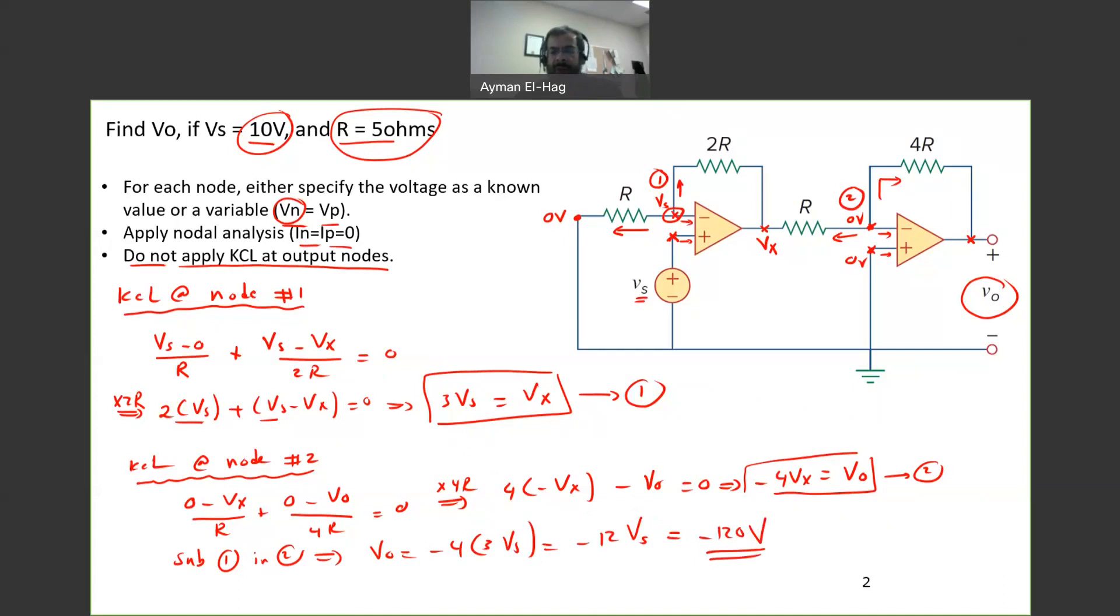So that will be your output voltage. Now here in this question, we did not specify the Vs and the minus Vs, which will lead the op-amp to saturation if this value exceeds that level. Now since we don't specify Vs and minus Vs, then we just, the question ends here. So your Vout is equal to minus 120V.